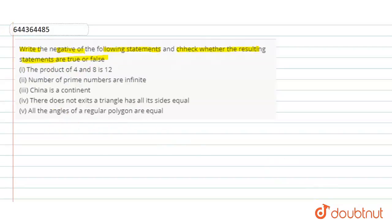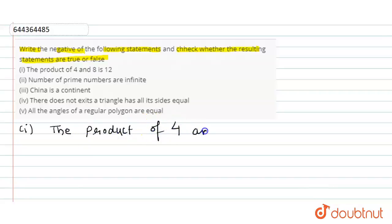The first statement given to us is: the product of 4 and 8 is 12. So the negation of the statement will be: the product of 4 and 8 is not 12. We have to check whether this negation is true or false. The product of 4 and 8 is 32, not 12, so this negated statement is true.